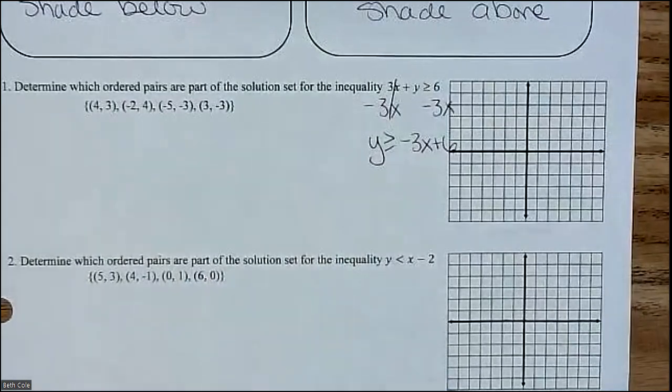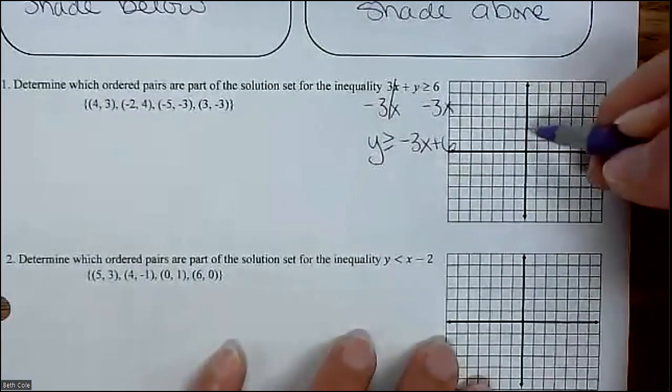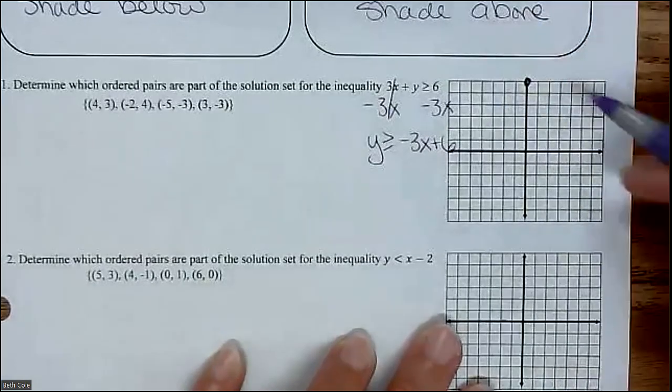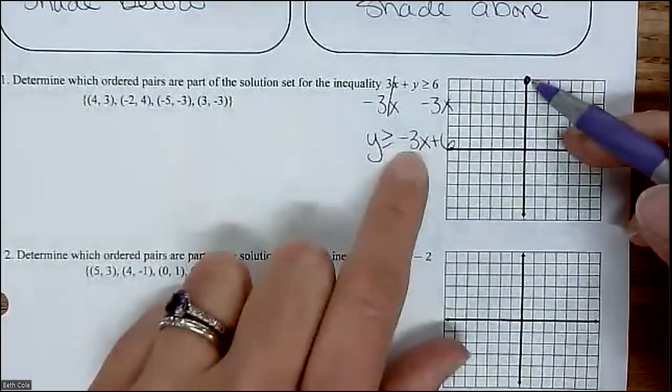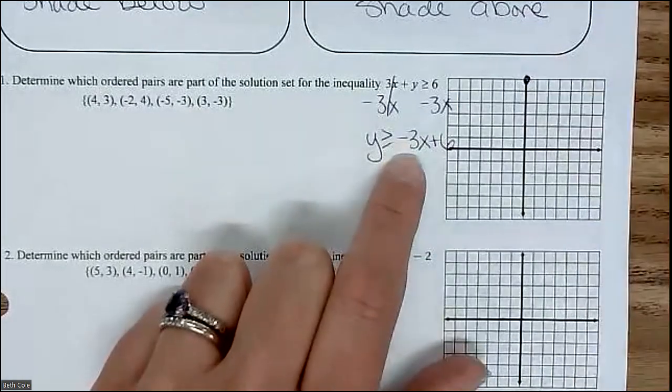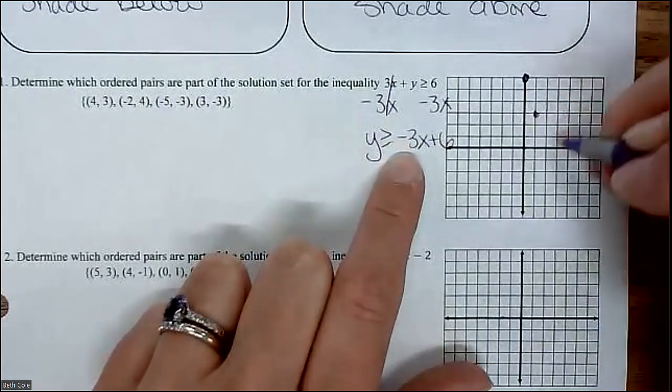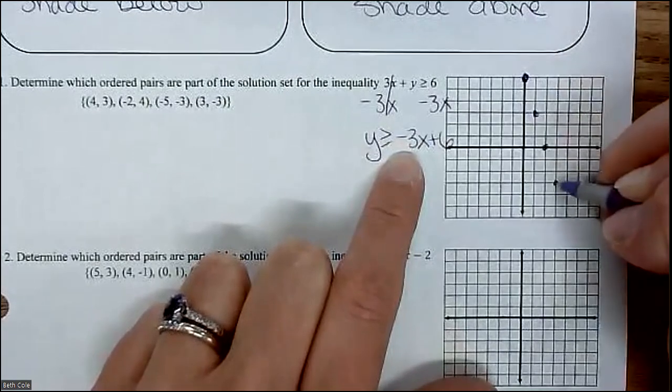Do you see that slope and y intercept? Where's the y intercept? Where are we going to start? 6. You're going to count up 6. So point right there. And then what does a slope of negative 3 tell you to do? Like what are your instructions? Good. Down 3, right 1. Down 3, right 1. Down 3, right 1.